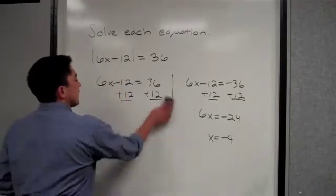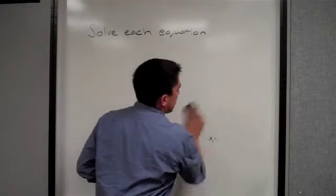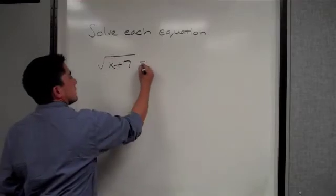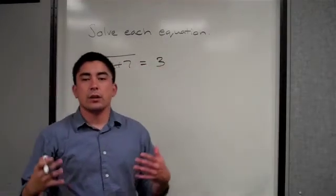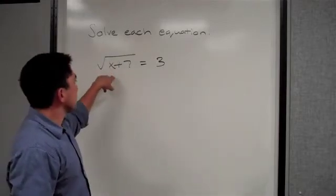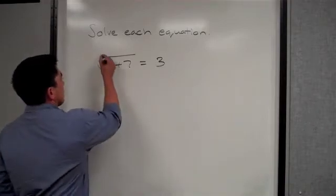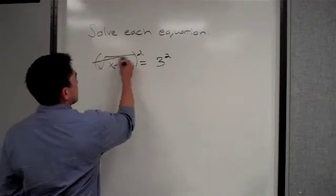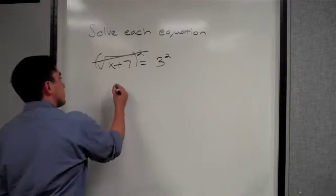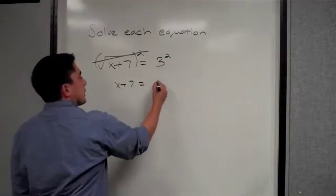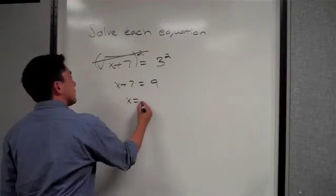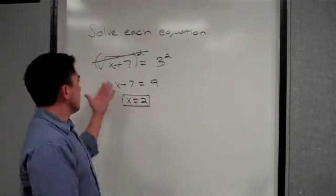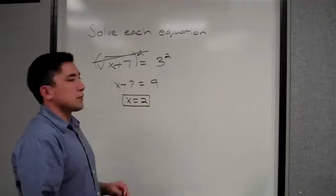The second example had to do with roots. Our second equation is: the square root of x plus 7 is equal to 3. We're solving for x, so we need to get x by itself. We square both sides because a root and a square cancel each other out. Those cancel, leaving x plus 7 equals 9. Subtract 7, and x is equal to 2. Really only two steps to solve for x.